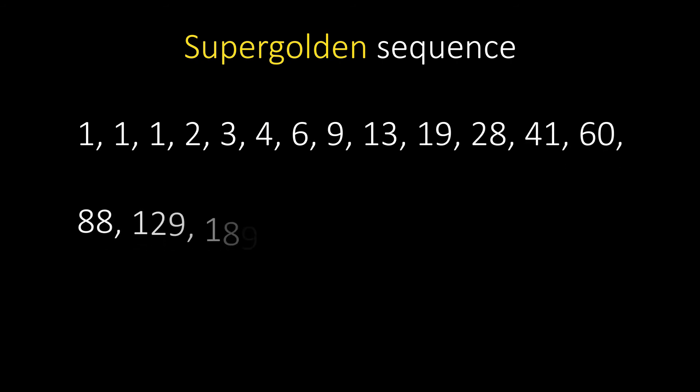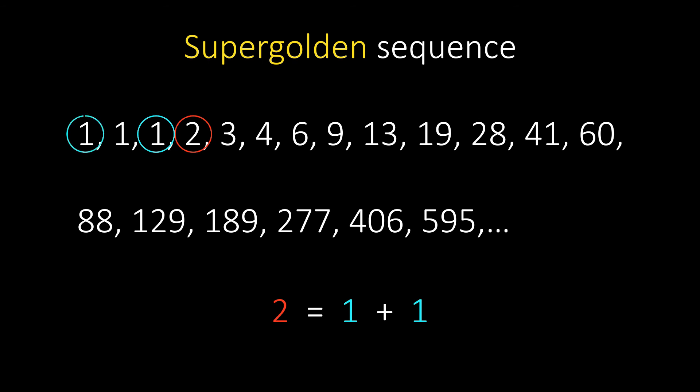Now let's talk about super golden sequence. The super golden sequence is a sequence where the ratio of conjugate terms approaches the super golden ratio. The first 3 terms are each one, and each term after that is calculated by adding the previous term and the term 2 places before that.